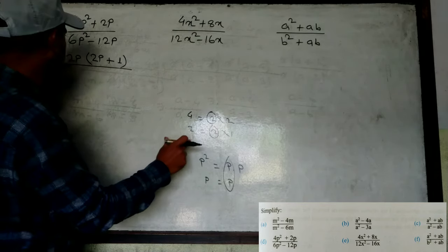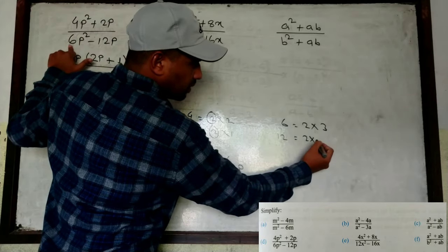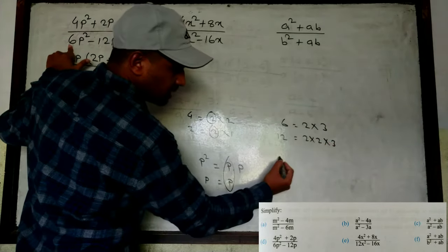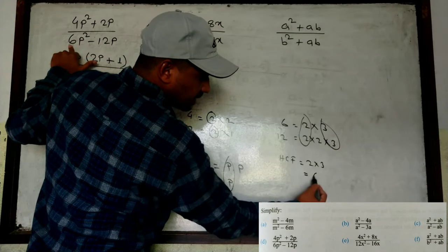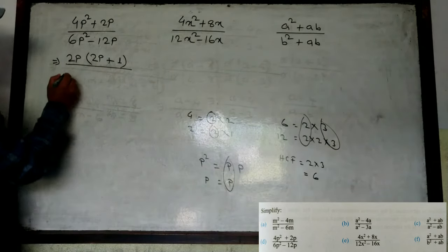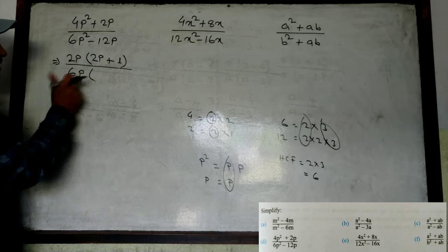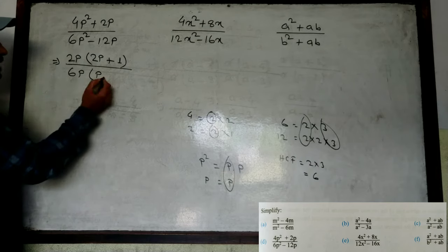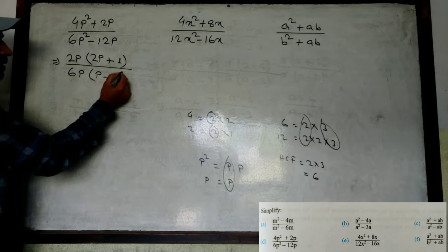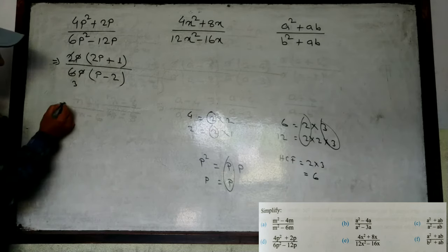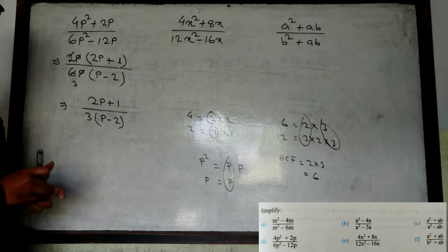Similarly 6 and 12: 6 means 2×3, 12 means 2×2×3. Common is 6. p² and p: common is p. So from 6p² - 12p, common is 6p. Remaining: from p², p common so remaining p. Minus: 6×something = 12, so 2. p already common. p and p cancel, 2 and 3 give 6. So the answer is 2p + 1 by 3p - 2. Hope you understand this.